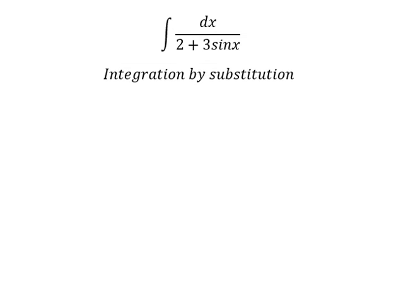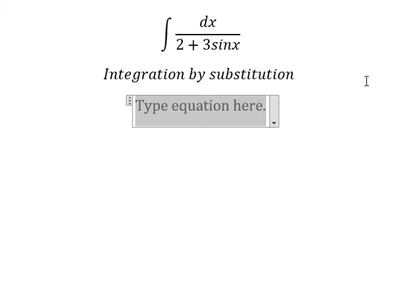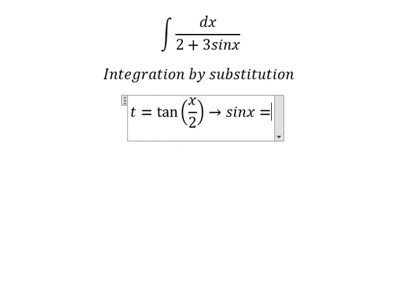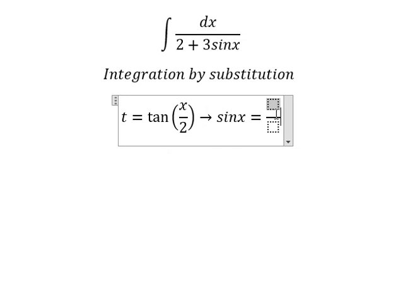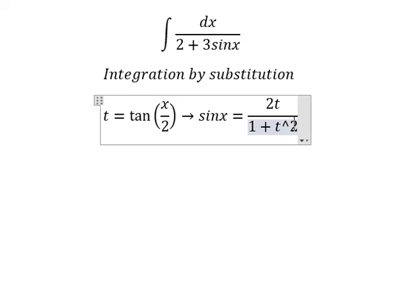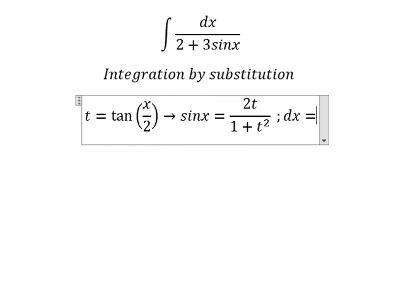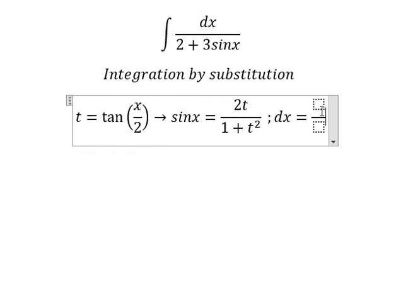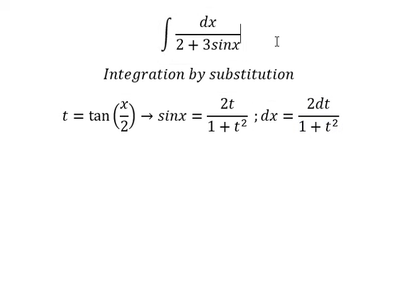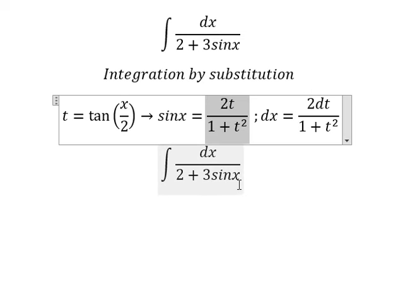I will put t equals to tan(x/2). So sin x we need to change into 2t over 1 plus t squared, and dx we will change for 2dt over 1 plus t squared. Now we change sin x into this one.